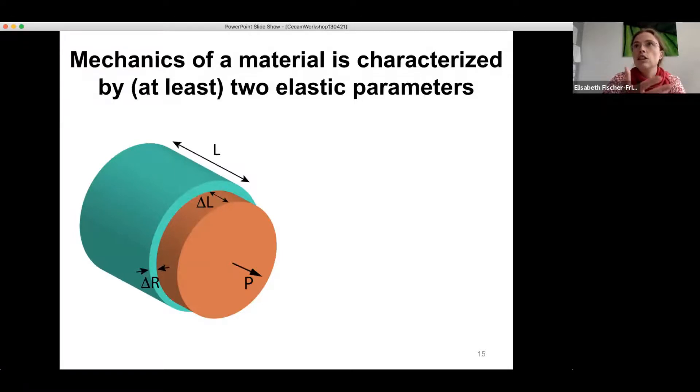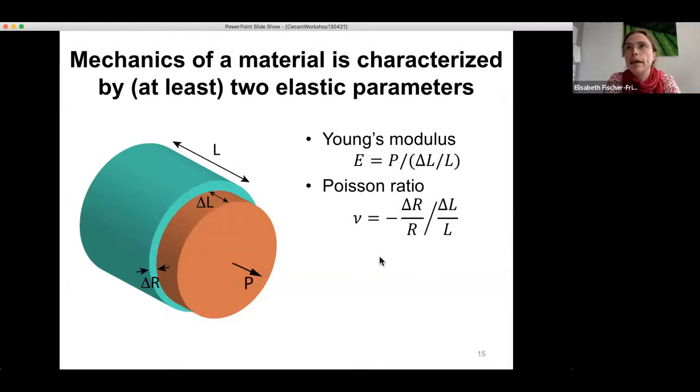And let's consider the simple textbook example of a homogeneous deformation of the cylinder by applying forces to the top and bottom plate as indicated here in the sketch. And then just as a reminder, the Young's modulus was defined as the force density P divided by the relative elongation of the cylinder. And vice versa, the Poisson ratio tells us about the magnitude of the Poisson effect. That means how much the cylinder changes its radius in response. So the Poisson ratio is the relative radius change divided by relative length change and then with a minus sign in the front.